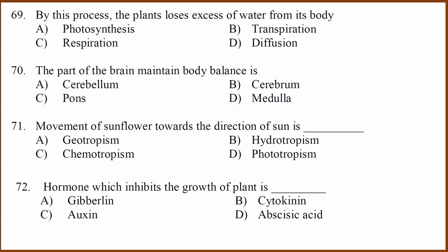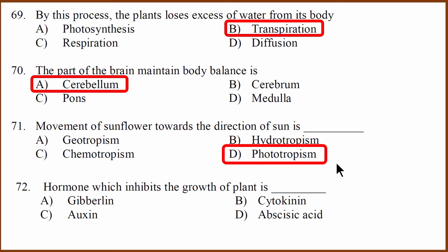Plant related question. Plant loses excess of water from its body through transpiration. Part of the brain that maintains body balance is cerebellum. There is no logic here, just have to remember. Movement of sunflower towards direction of the sun. Sunflower goes towards direction of the sun. This is something to do with photo, which is direction of light. So in this case, the correct answer is phototrophism. Geotropism is gravity, hydrotropism is water related, chemotropism is chemical. Phototrophism is light related.